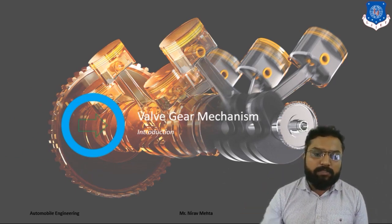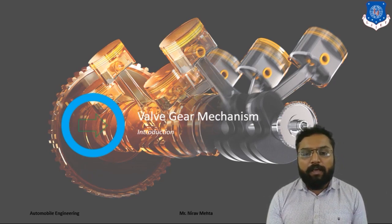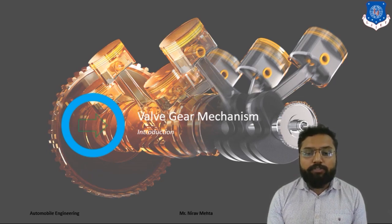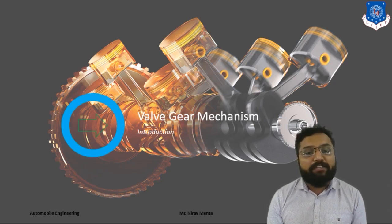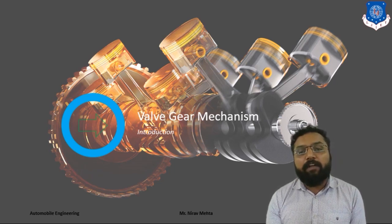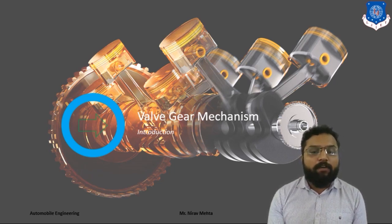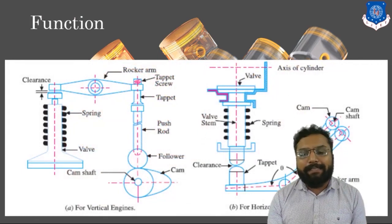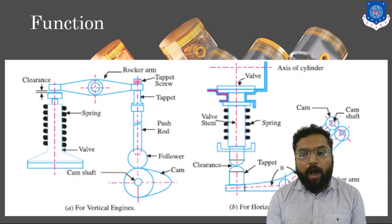Before getting into this Valve Gear Mechanism, we should understand its function, how it works, how it is constructed, and the different aspects of this mechanism. The Valve Gear Mechanism is used to provide a sufficient amount of fuel to our internal combustion engine at the perfect time. Here you can see a diagram for a vertical engine and for a horizontal engine, showing the construction and arrangement of the Valve Gear Mechanism.